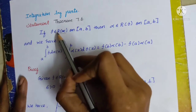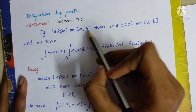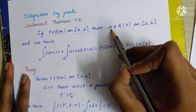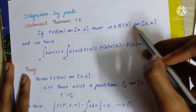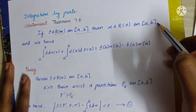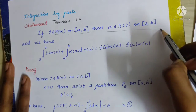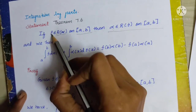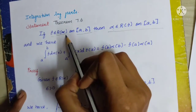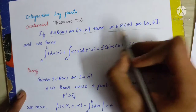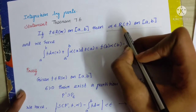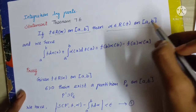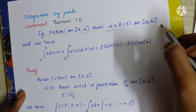If f belongs to R(alpha) on the closed interval [a, b], then alpha belongs to R(f) on the closed interval [a, b]. This is the condition we need to prove. We are given f belongs to R(alpha), and we will prove that alpha belongs to R(f) on closed interval [a, b].